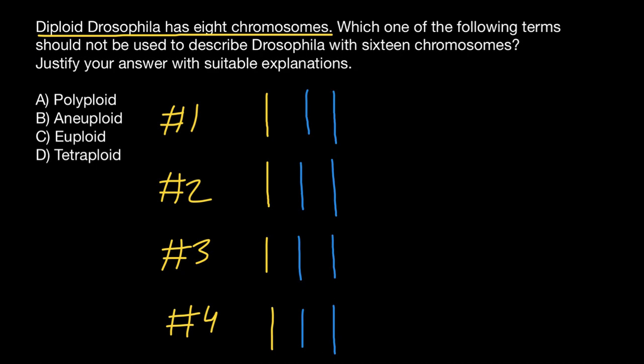If we consider that from the father's side the organism also got two full sets of chromosomes, then this is going to be a tetraploid organism with 16 chromosomes instead of the normal eight. We call such a condition polyploidy and tetraploidy, but again it is going to be euploid because it has four full sets of chromosomes.